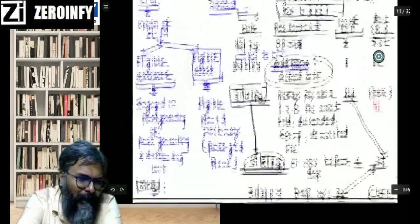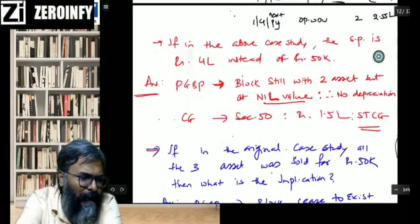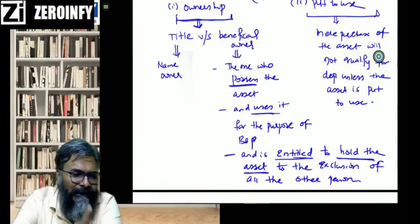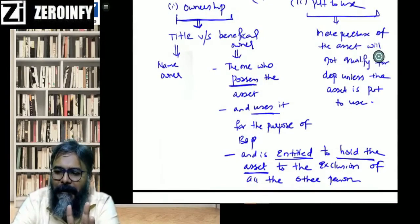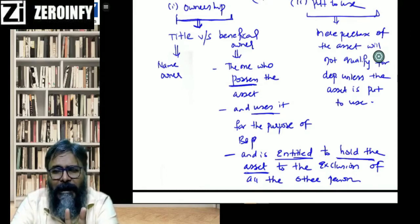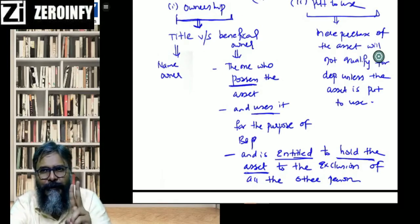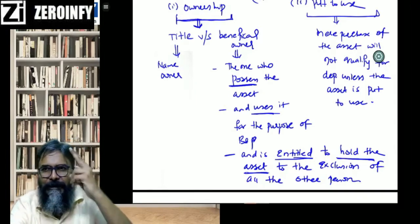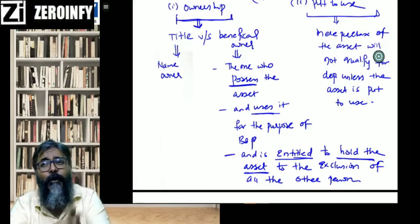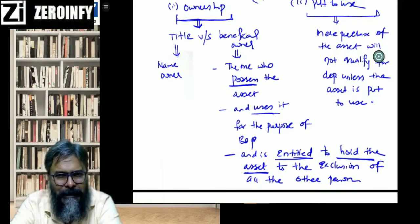Apart from that we also discussed condition number two: conditions for depreciation. The conditions are possess, use, and be entitled to hold. It is the beneficial owner who is entitled to the depreciation. The assessee must be in possession of the asset, using it for the purpose of business or profession, and entitled to hold the asset to the exclusion of all other persons.